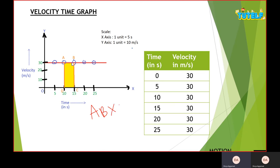I'll write AB times BC. My value of AB is 15 minus 10, which gives me 5 seconds. BC here is 0 to 30, that is 30. So the area is 5 times 30, which gives me 150.